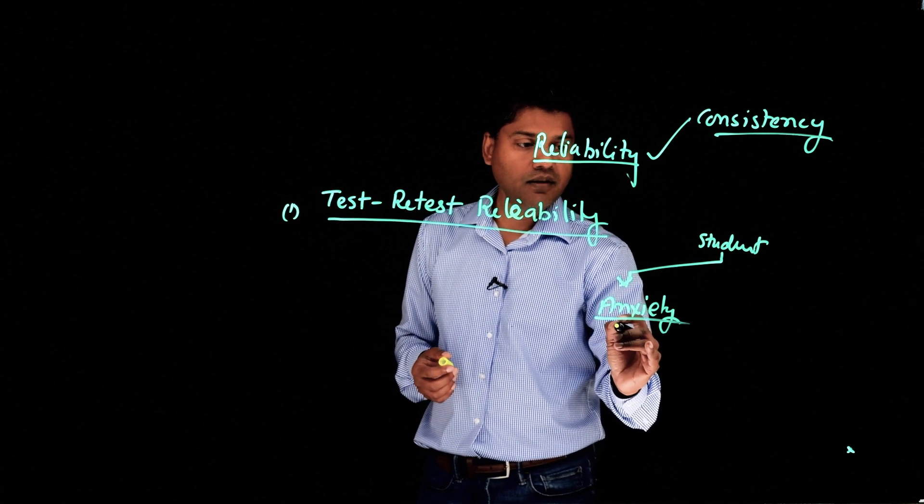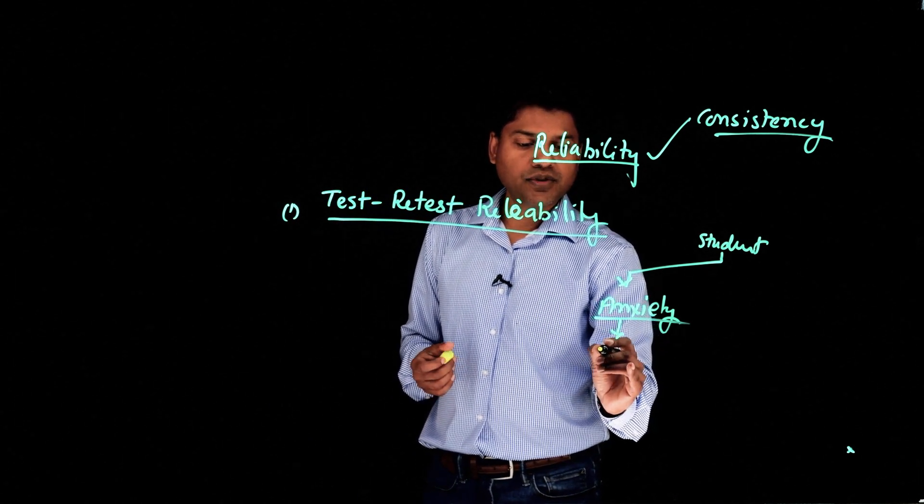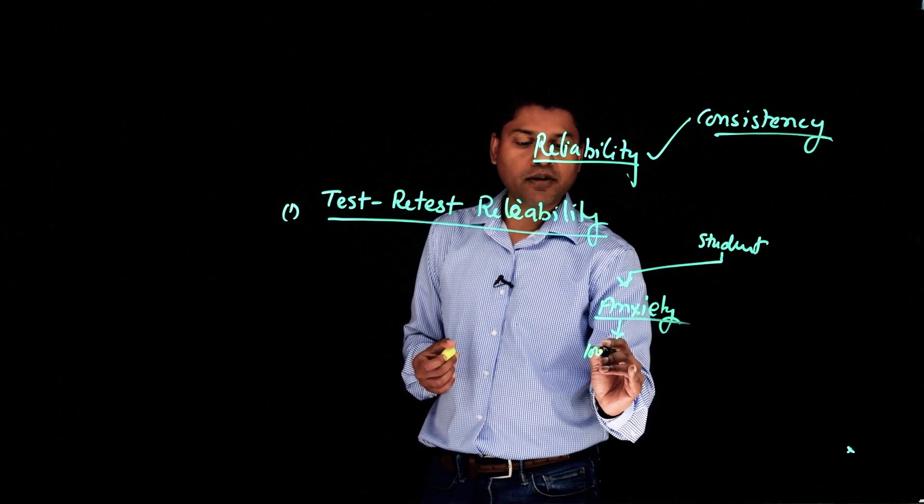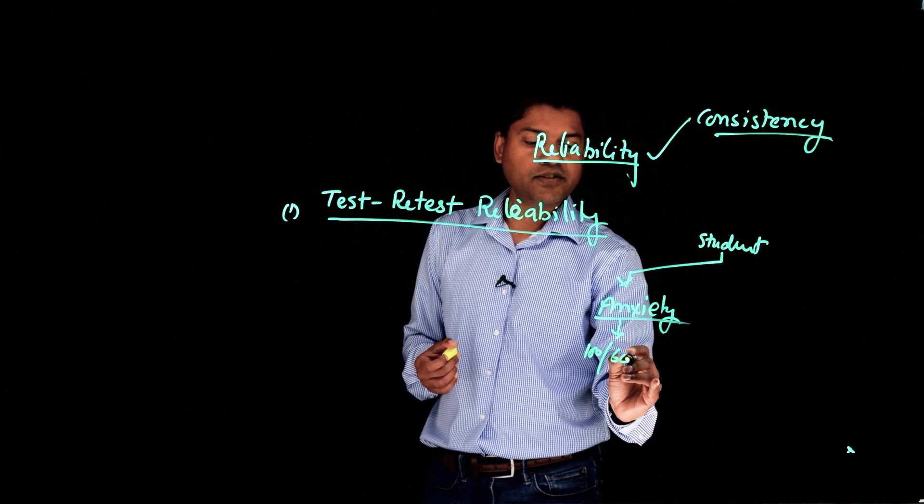And I got certain scores. So on this scale, the person scores out of 100, this person scored 60.